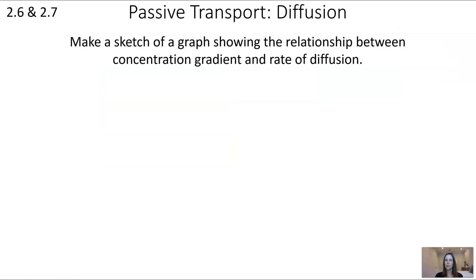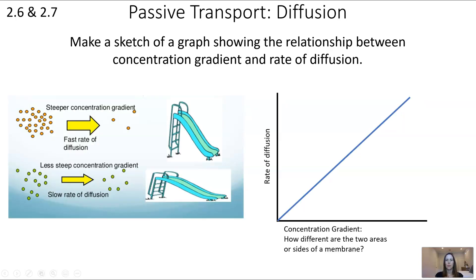Something that influences the rate of diffusion — how quickly particles move — is the concentration gradient. The higher the concentration gradient, the faster the rate of diffusion. You can think of this like a slide: if there's a big difference between the top and the bottom, it's going to be a quick slide. The bigger the difference between concentrations, the faster the rate of diffusion.